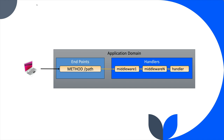Middlewares can also short-circuit and return before calling next. For example, if you have a middleware doing authentication, the first thing you want to do is check whether the user is logged in. If they're not logged in, you don't want to propagate the call to the handler that looks up information, so the middleware short-circuits it. That's a really good use case for that.